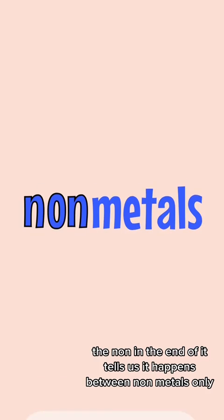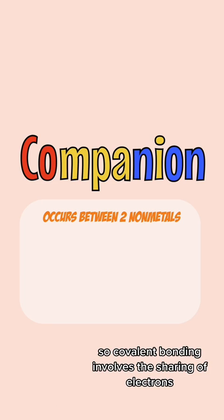The non in the end of it tells us it happens between non-metals only. Companions means friends that share, so covalent bonding involves the sharing of electrons.